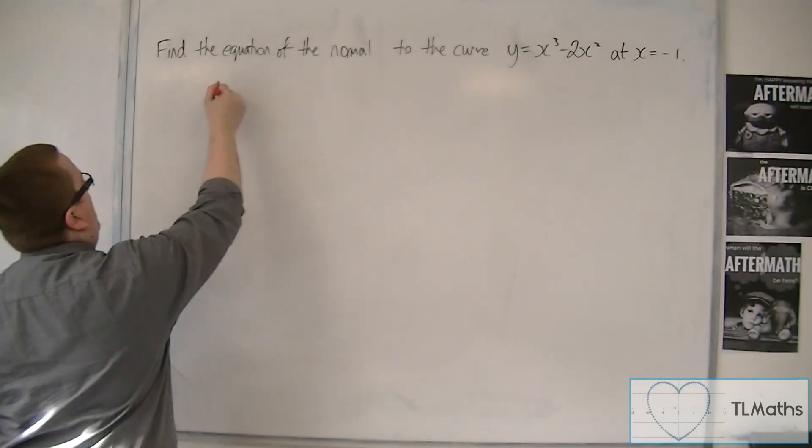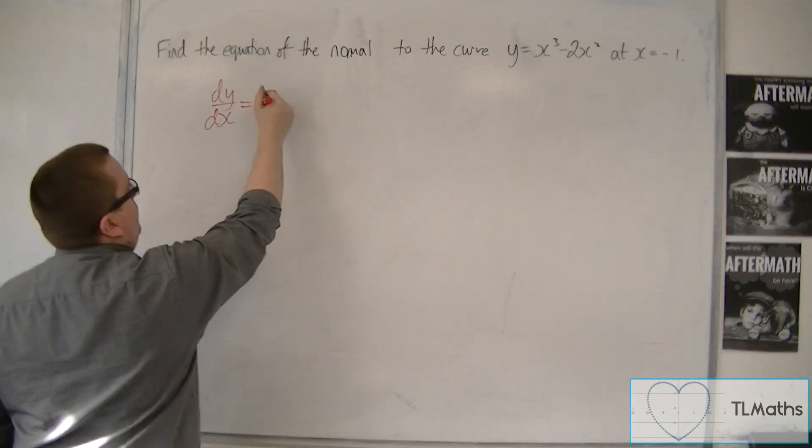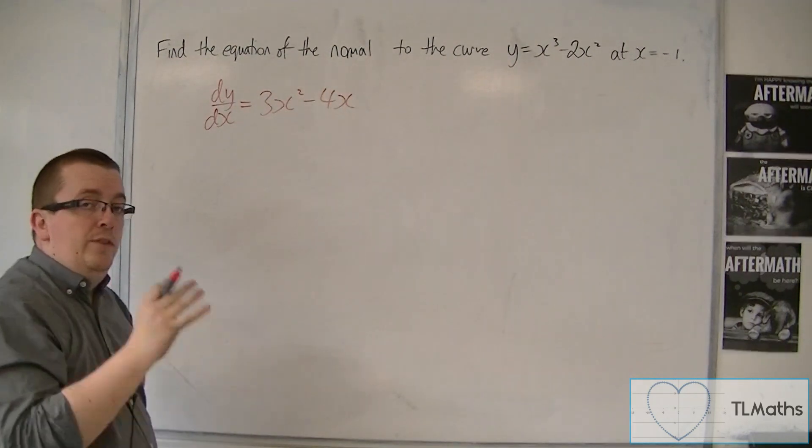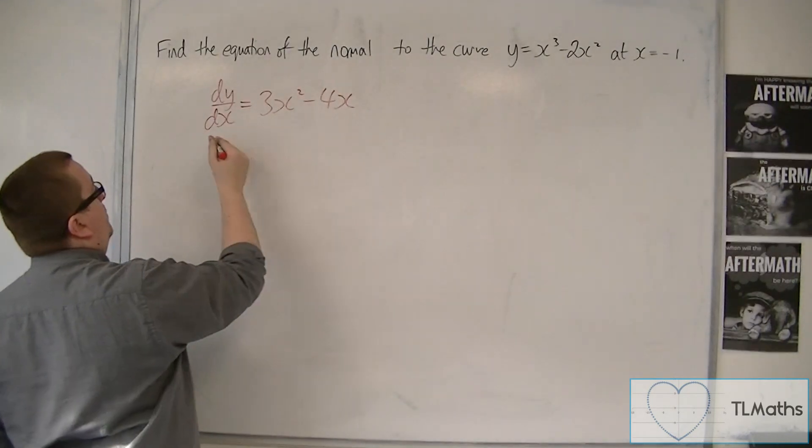So we find dy by dx first. So dy by dx will be 3x squared minus 4x. I then evaluate the gradient function when x is minus 1.